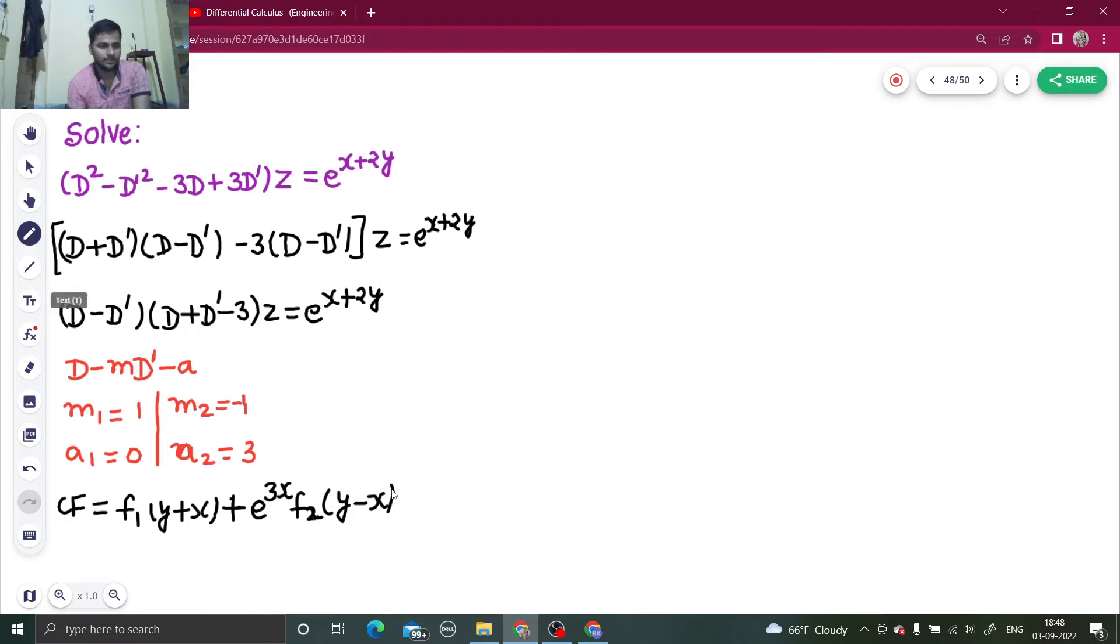Now coming to the particular integral because complementary function is all done. The particular integral is 1 upon d square. You can either use the factorized form or the form given in the question as well. Because in e power a1x plus b1y we just replace d and d dash. So both forms will work.